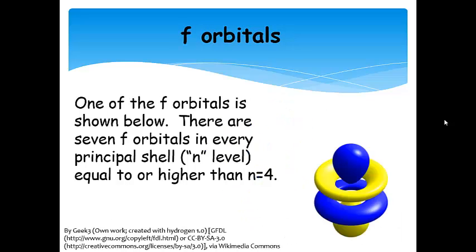F orbitals. There are seven F orbitals for every principal shell that is higher than N equals 4. That's the lowest N that can have F orbitals. Here's one of them. Some of them look quite different.